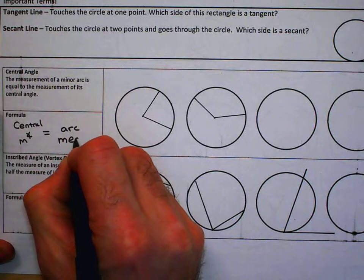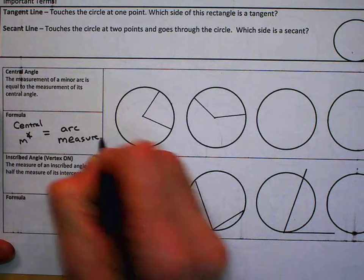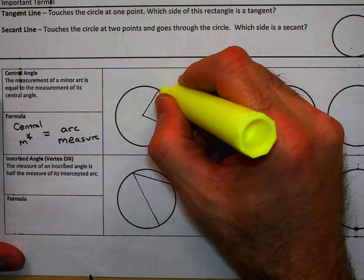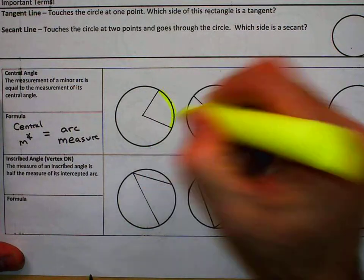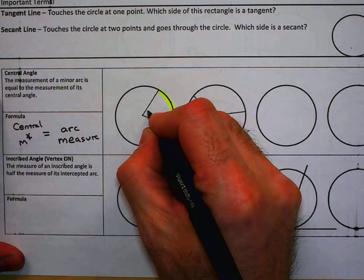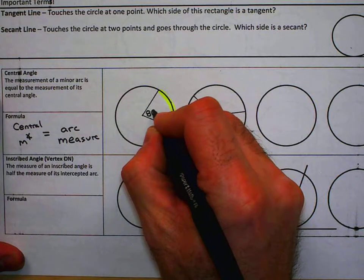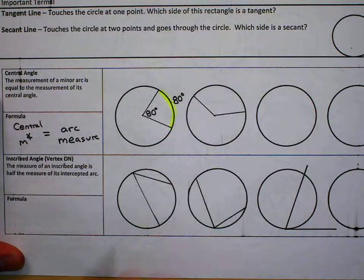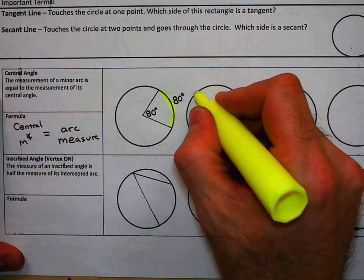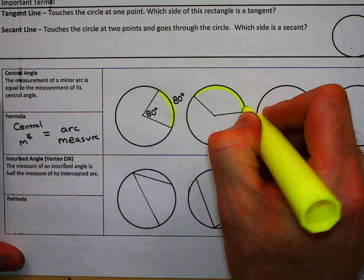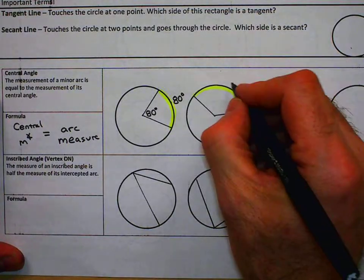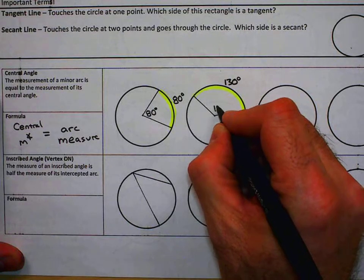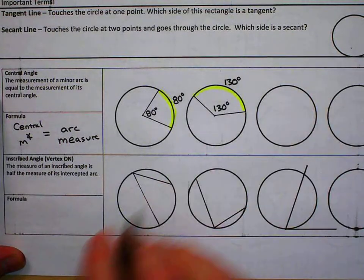In other words, if I look at this arc and I knew that this angle was 80 degrees, I'd also know the arc measure is 80 degrees. It's that simple. On the other hand, if I was told that this arc was 130 degrees, the angle is 130 degrees. So that's pretty simple.